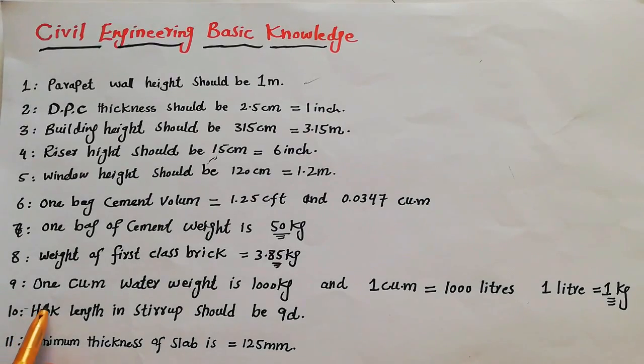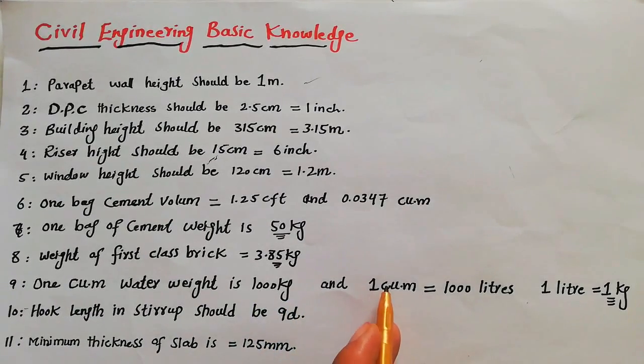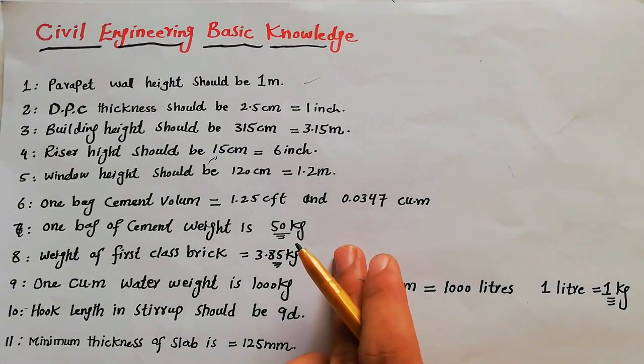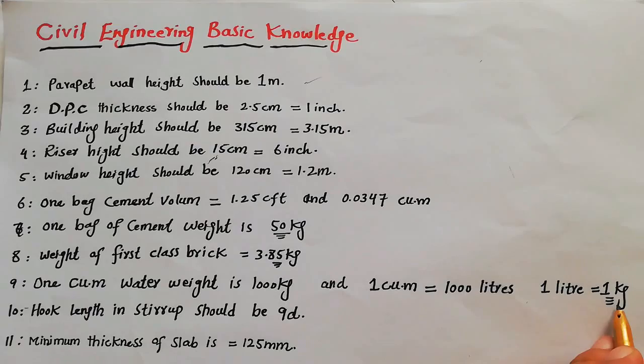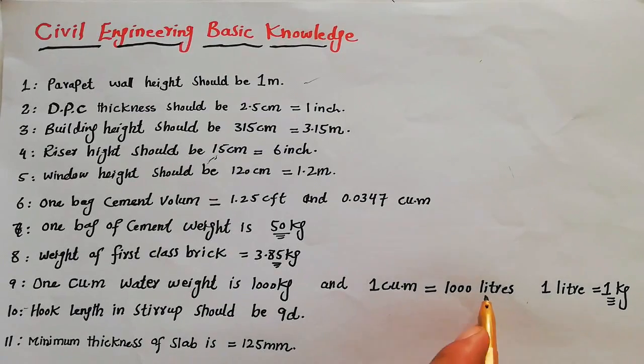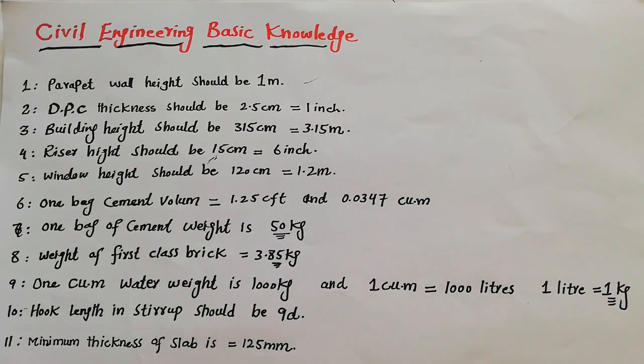Ninth: one cubic meter water weight is 1000 kg, because in one cubic meter we have 1000 liters, and one liter weight is one liter of water weight is 1 kg. So in one cubic meter, we know that density of water is 1000 liters, so one liter weight is 1 kg. Keep in your mind this point.